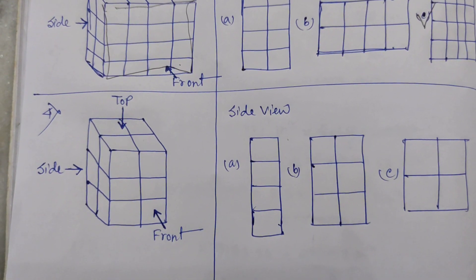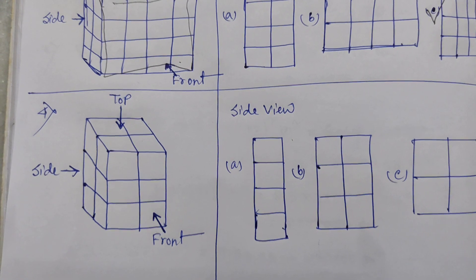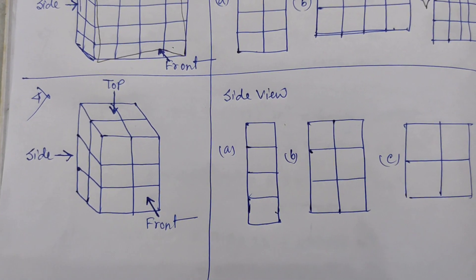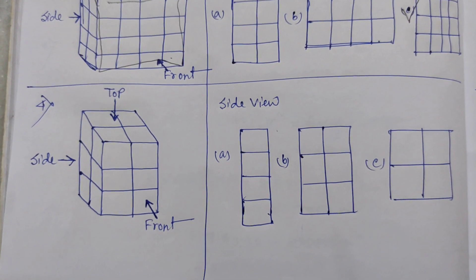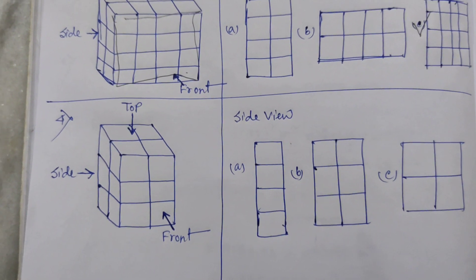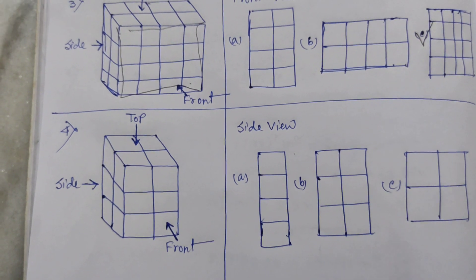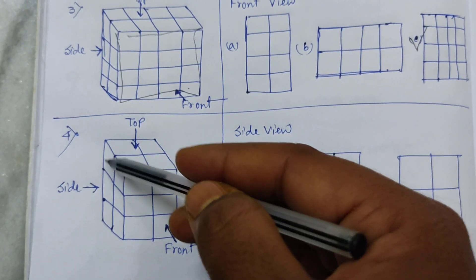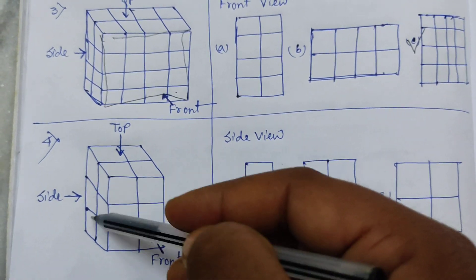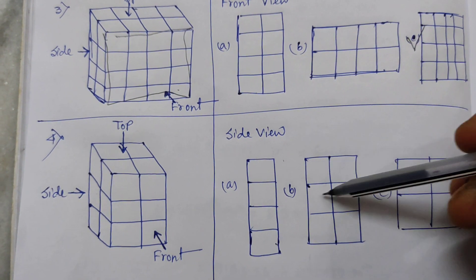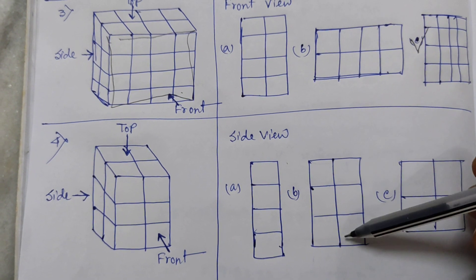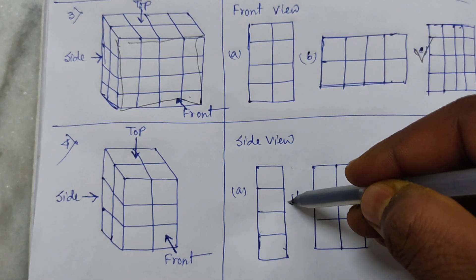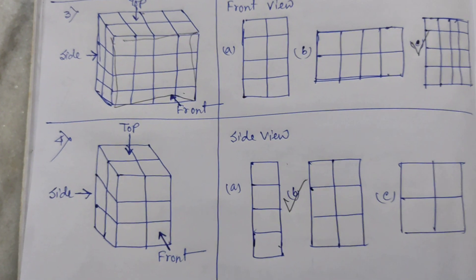Next, number four — here are the top view, side view, and front view shown. We have to choose the side view. From the side view, we can see three rows and two columns. So Option B is correct.